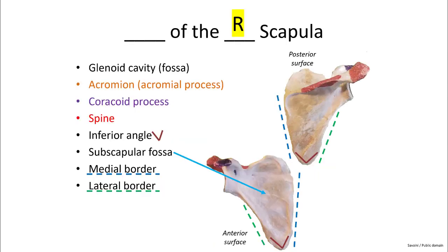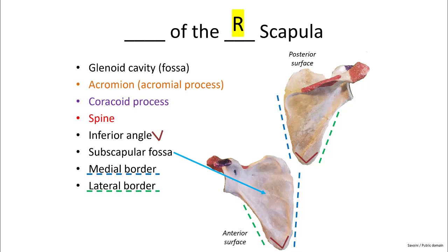We can see the right and left scapula. The features you need to know include the glenoid cavity or glenoid fossa, which forms the cup of your shoulder socket. The acromion, also known as the acromial process, is the feature you can feel on the top of your shoulder. The coracoid process is a little hook that goes right above the glenoid cavity. The spine of the scapula is the handle we referred to earlier. Then we have the inferior angle at the bottom pointy portion, as well as the medial and lateral borders, and finally the subscapular fossa, which is the smooth surface that presses against the torso posterior to the ribs.